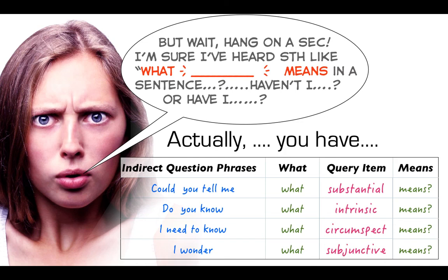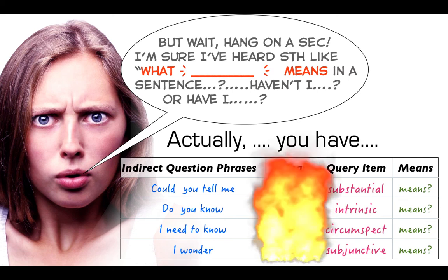But guess what happens. Sometimes students mix this rule and the earlier rule and they say something like this. Could you tell me what does substantial means? Do you know what does intrinsic means? I need to know what does a circumspect means and I wonder what does a subjunctive means. Now don't do that because that's a big fat mistake and you mustn't do that.